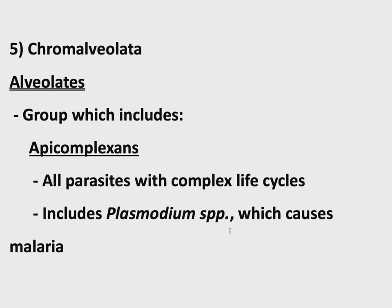Plasmodium spp. — this is the first time we've come across this. We talked in the first chapter about the genus and species naming convention, binomial nomenclature. Plasmodium here is the genus, and 'spp.' doesn't mean a specific species. When you see this, it means several different species within this genus. So the abbreviation just means several species. Plasmodium falciparum is one that comes to mind, but there are several species which can cause malaria. You see Plasmodium spp. and you should associate that with malaria.